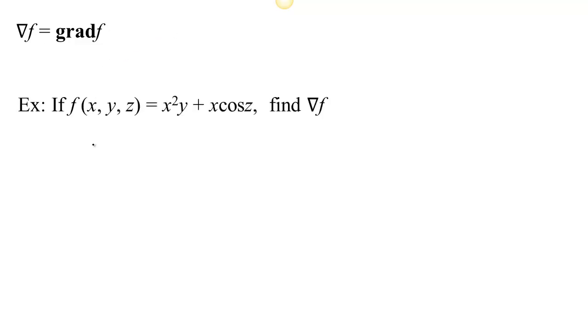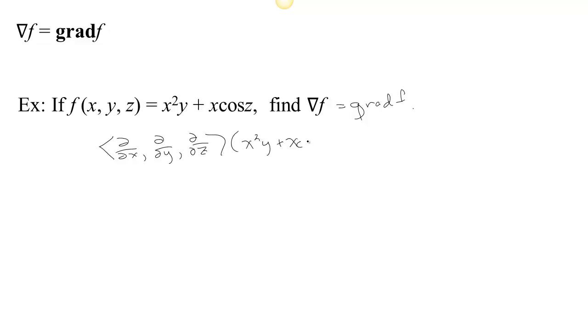That means the gradient of f can actually be written as the del operator applied to some scalar-valued function f. For example, if we have this scalar-valued function and we write ∇f, what we're really talking about is the gradient of f. The del operator (d/dx, d/dy, d/dz) operates on the function. So we get the partial with respect to x as 2xy plus cos(z), d/dy gives x squared, and d/dz gives minus x·sin(z), just like we computed before.